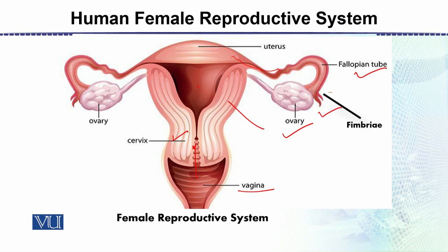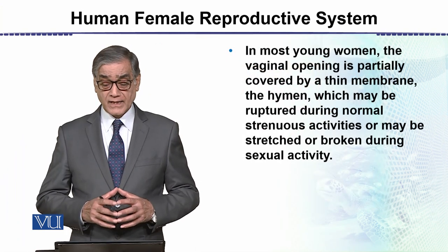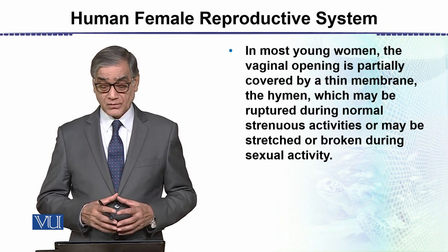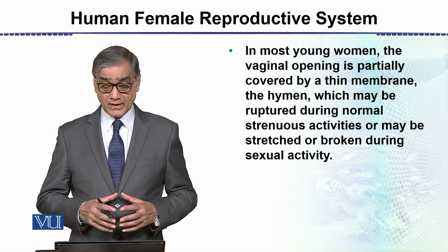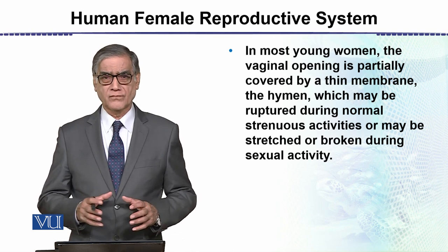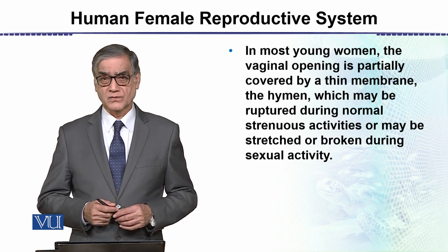These are the main structures of the Female Reproductive System. In young women, the vaginal opening is partially covered by a membrane called the Hymen, which may be ruptured during strenuous exercise or at the time of sexual intercourse.